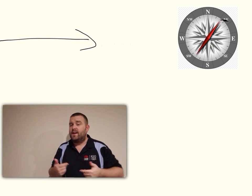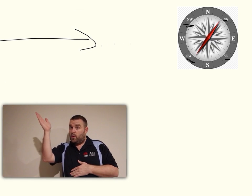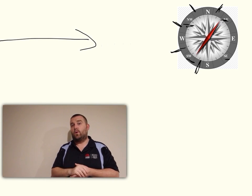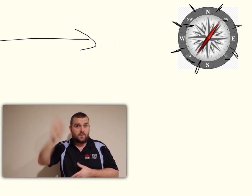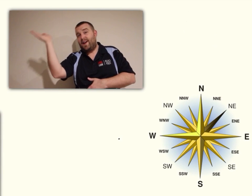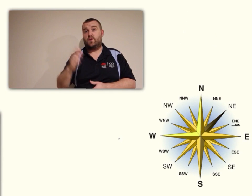On top of that, if we need to get even more accurate, well then we go the midpoint between north and northeast and call it north-northeast. So two norths, one east. The exact same thing between east and northeast, we'll call it east-northeast. So there's two lots of east for every north.